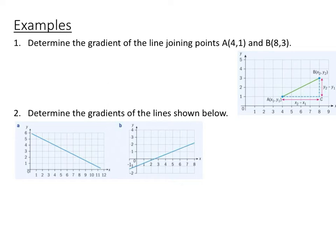Here's a couple examples. Determine the gradient of the line joining points A, which is 4, 1, and B, which is 8, 3. And then also down here, find the gradient of these two lines given the graphs.